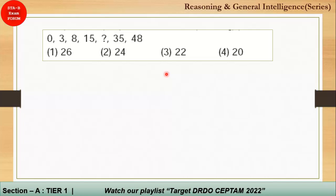The next question is a special number type. The series is near perfect squares: 1² − 1 = 0, 2² − 1 = 3, 3² − 1 = 8, 4² − 1 = 15. So the next should be 5² − 1 = 24. Continuing: 6² − 1 = 35, 7² − 1 = 48. The correct answer is option 2.